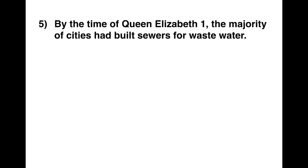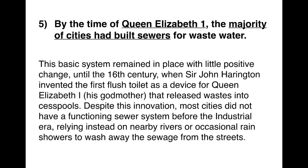Question five: 'By the time of Queen Elizabeth I, the majority of cities had built sewers for waste water.' Look for: Queen Elizabeth I, majority of cities, had built sewers. In the passage, we find Queen Elizabeth I, and then the key words that give the answer: 'most cities did not have a functioning sewer system.' The answer is False — it's the opposite of the statement.